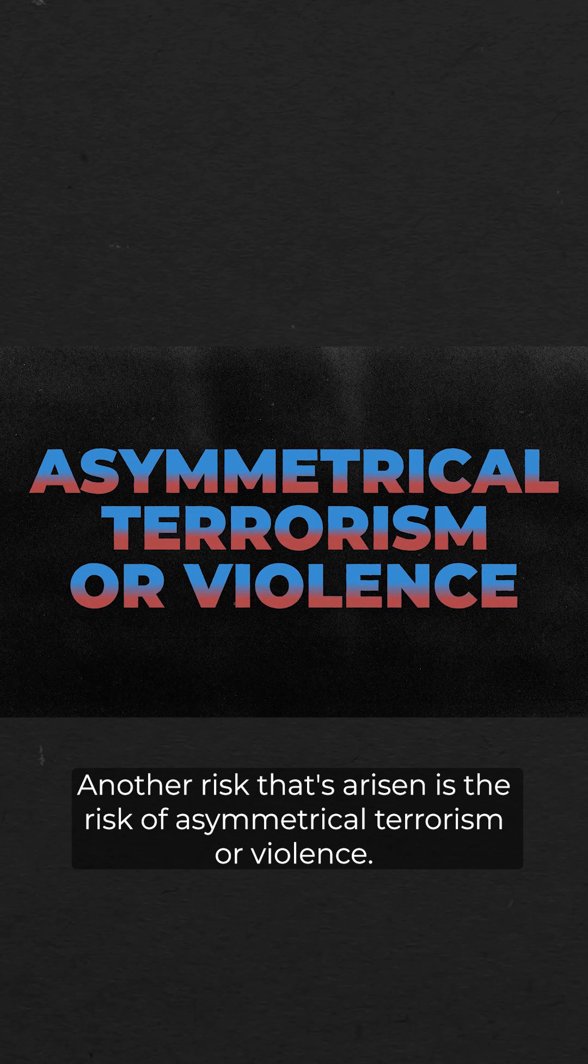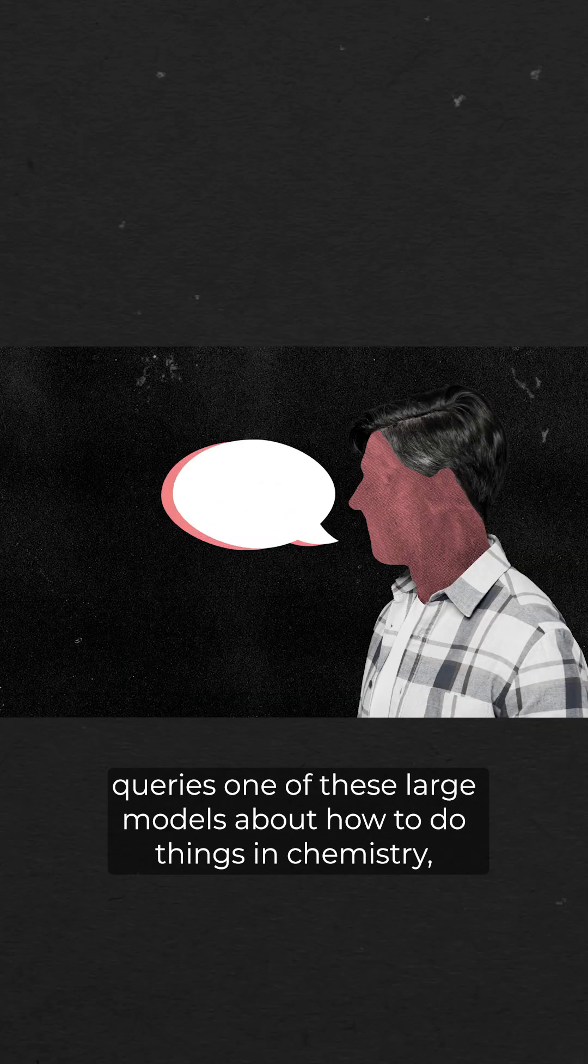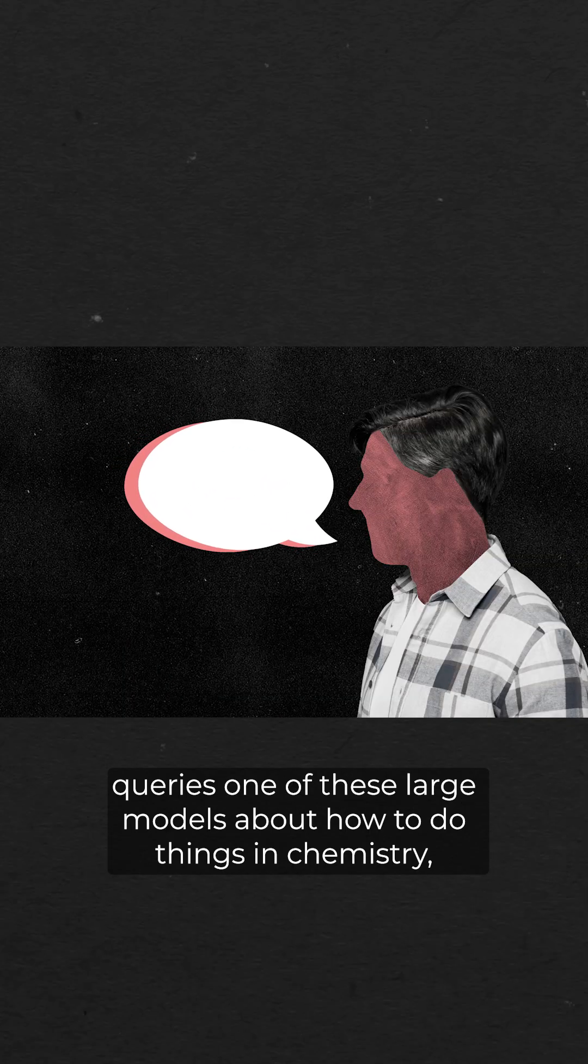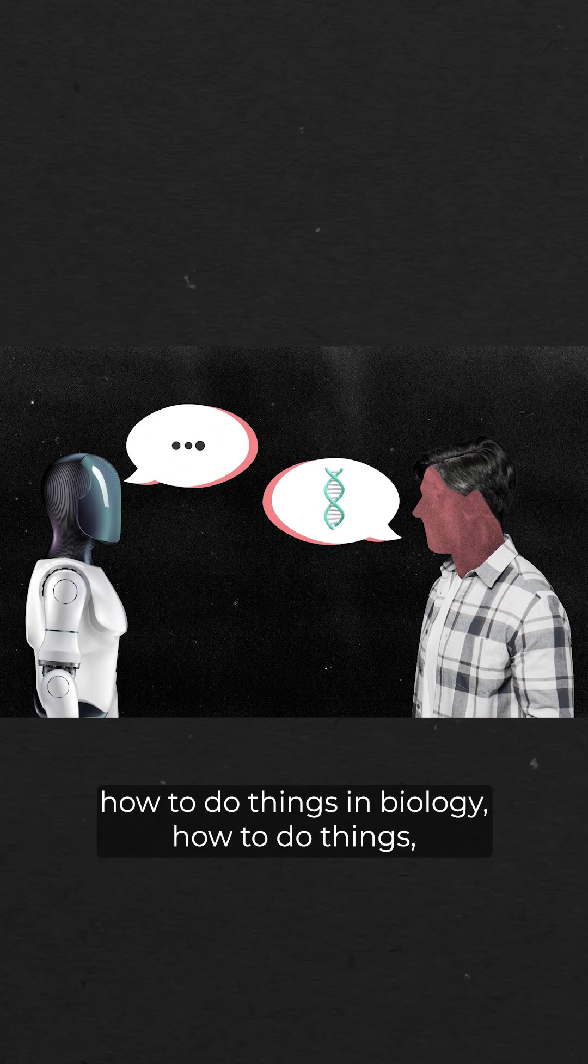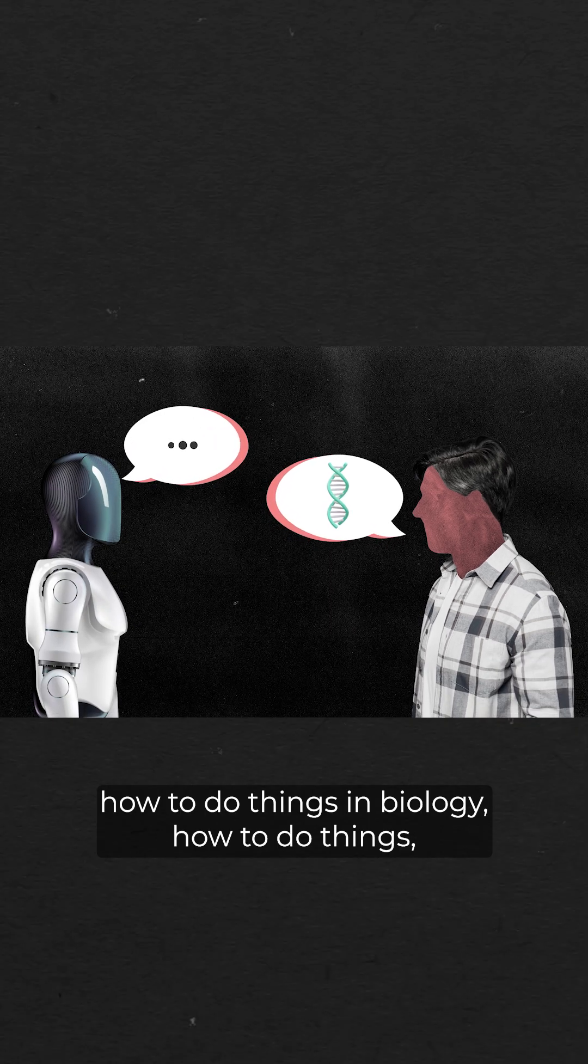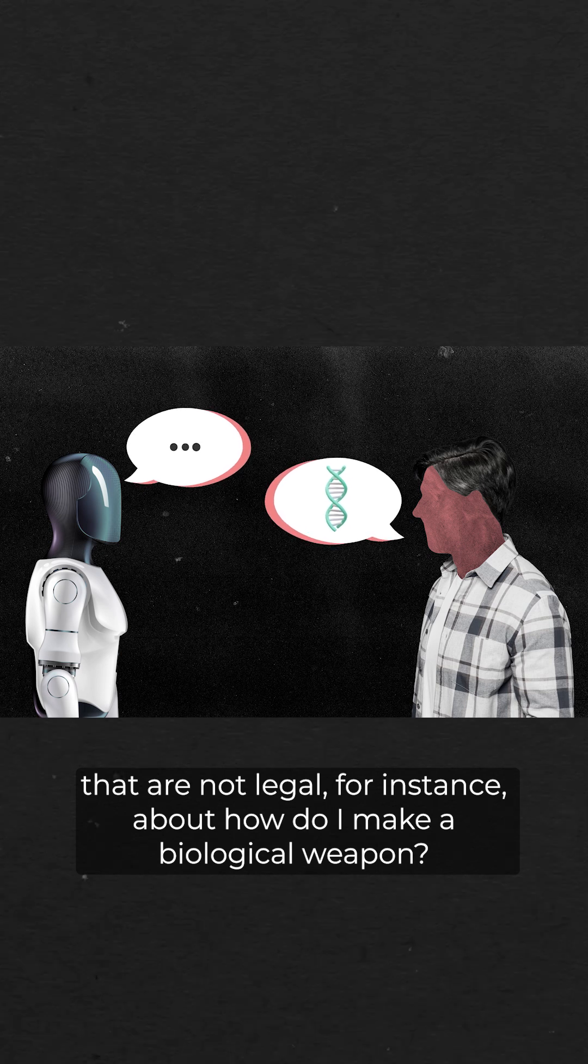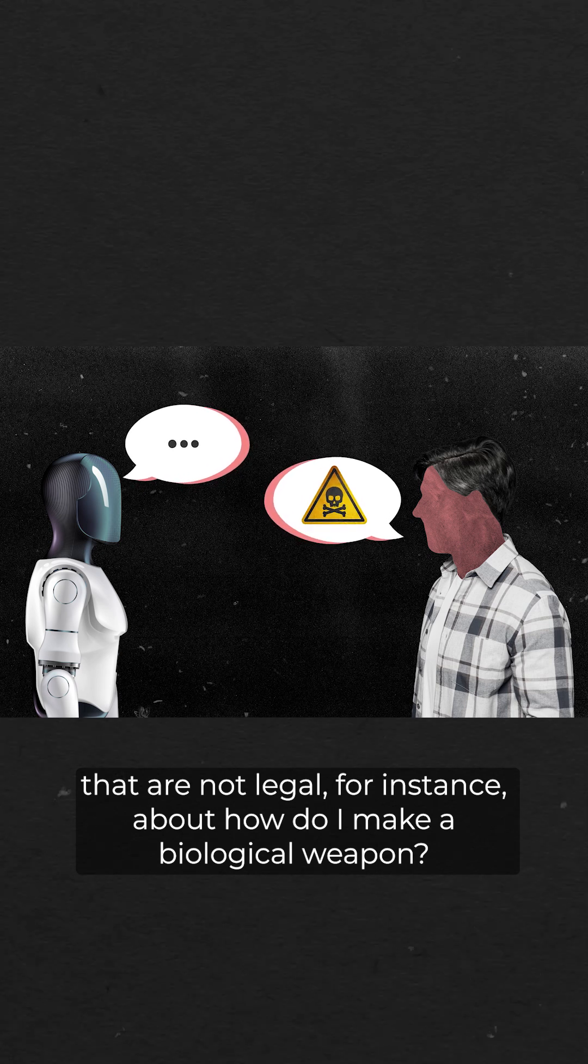Another risk that's arisen is the risk of asymmetrical terrorism or violence. If a human user queries one of these large models about how to do things in chemistry, how to do things in biology, how to do things that are not legal, for instance, about how do I make a biological weapon.